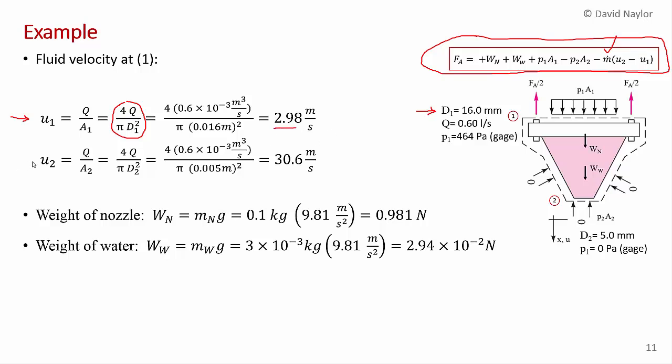We can do the same thing at 2. We have the volume flow rate. It's the same volume flow rate throughout, 0.6. And then we just do the same thing, but it's q divided by pi d2 squared upon 4. And the diameter of the outlet you're told in the problem statement is 5 millimeters. So as expected, the velocity is substantially higher because of the reduction in cross-sectional area. 30.6 meters per second.